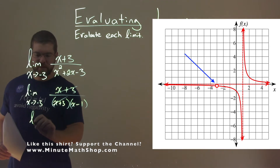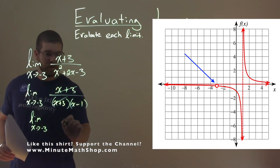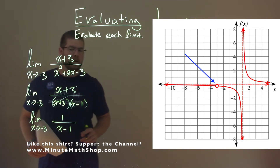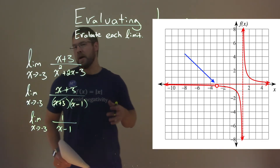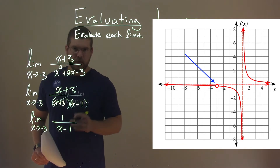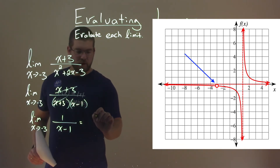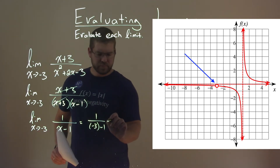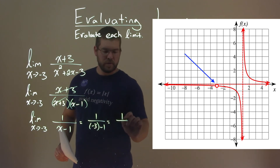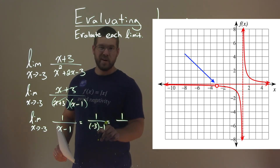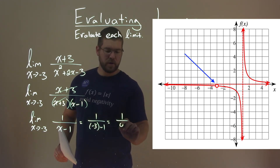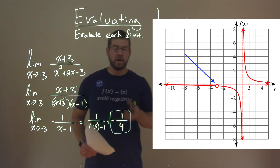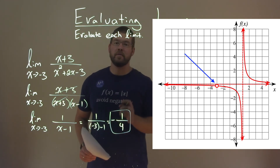So what happens now? We have the limit as x approaches negative 3 of 1 over x minus 1. Now we can plug negative 3 in for x to find this limit, because it will exist there. So we have 1 over negative 3 minus 1, which gives us 1 over negative 4, or negative one-fourth. This matches our graph, and so our final answer for this limit is negative one-fourth.